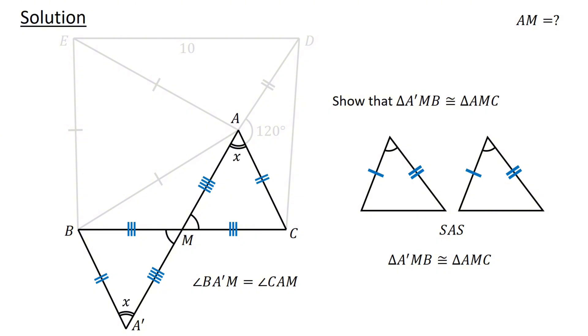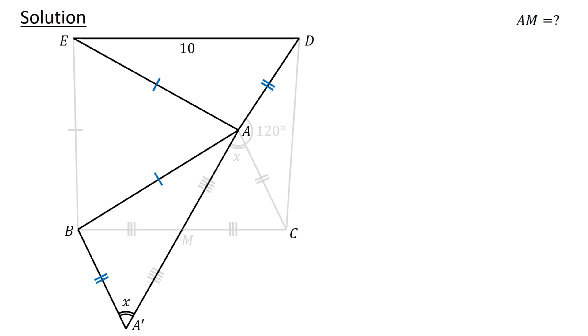Following this, consider triangles ABA' and EAD. Let's show that triangle ABA' is congruent to triangle EAD.